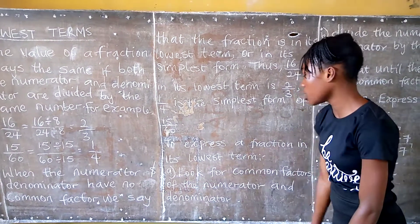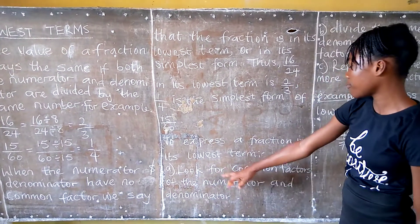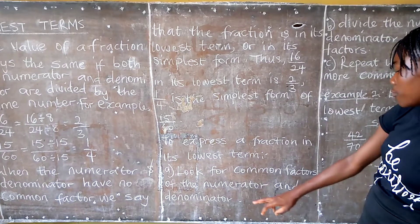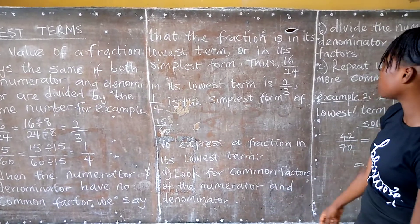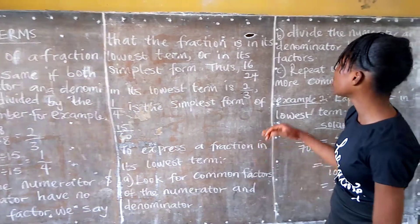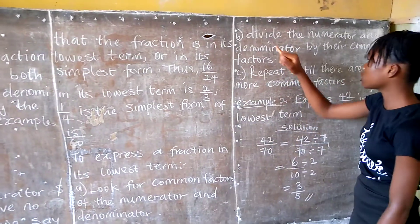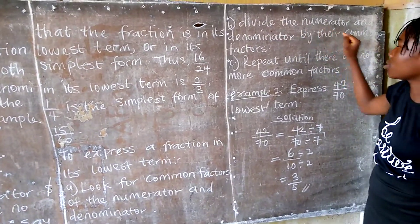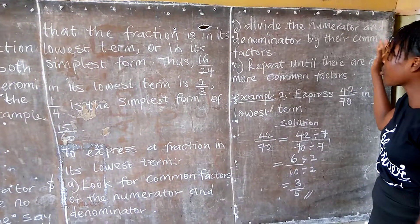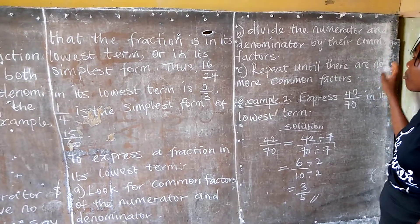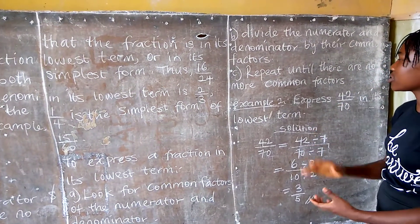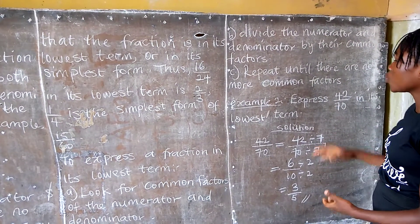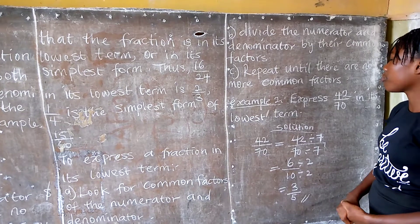Step 1: Look for the common factors of the numerator and denominator. Step 2: Divide the numerator and the denominator by their common factors. Step 3: Repeat until there are no more common factors.